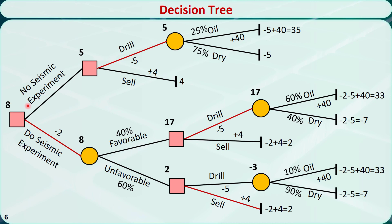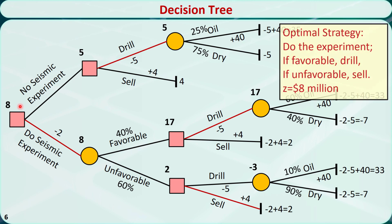Now the decision tree is complete. The optimal strategy is: do the experiment; if favorable, drill; if unfavorable, sell. The expected payoff is z = 8 million dollars.